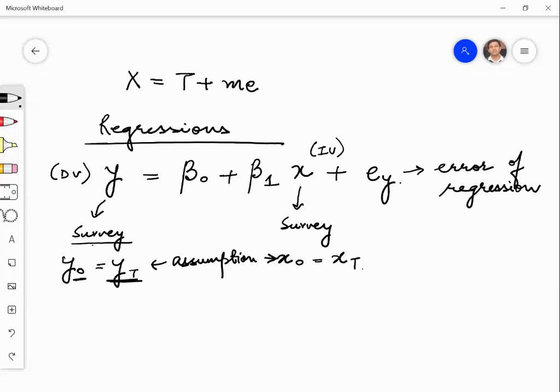But my friends, this is not correct because I have just tried to explain you that the observed is nothing but true plus there is some error of measurement. There will be some error of measurement because we cannot...